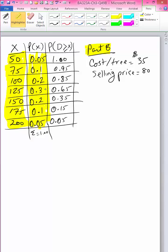Of course, we need to compute this cumulative demand column. Let's assume for this part cost per Christmas tree is $35 and our selling price is $80. So that means step one in our analysis, marginal loss is $35 and marginal profit is the $80 minus $35, which is $45.